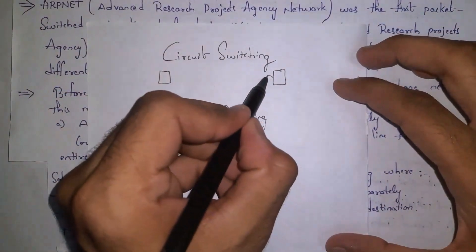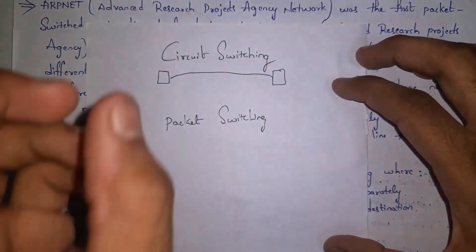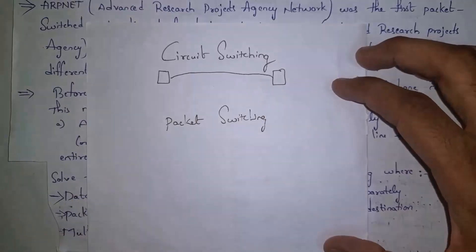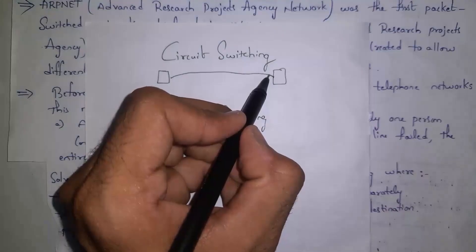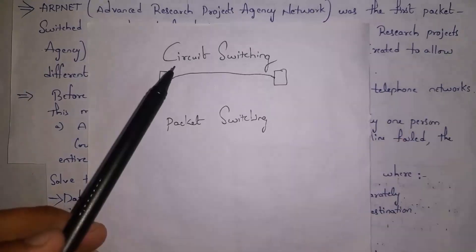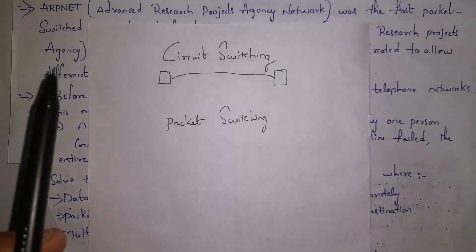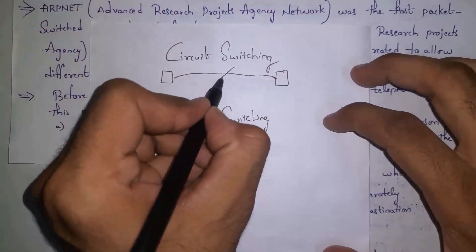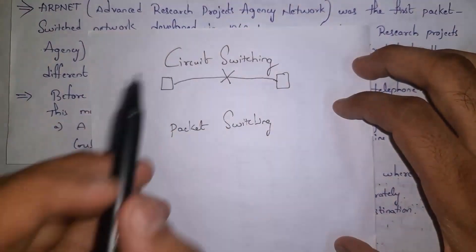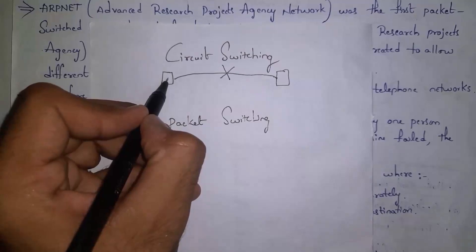For example, if you want to communicate with your friend using a landline phone, a cable connection needs to be established between you and your friend. By using that cable connection you can communicate. There is one dedicated line needed in order to establish connection — that dedicated line is nothing but a cable. In circuit switching, data is transferred very slowly and continuously, and if there is any cable break, the entire connection will be lost.